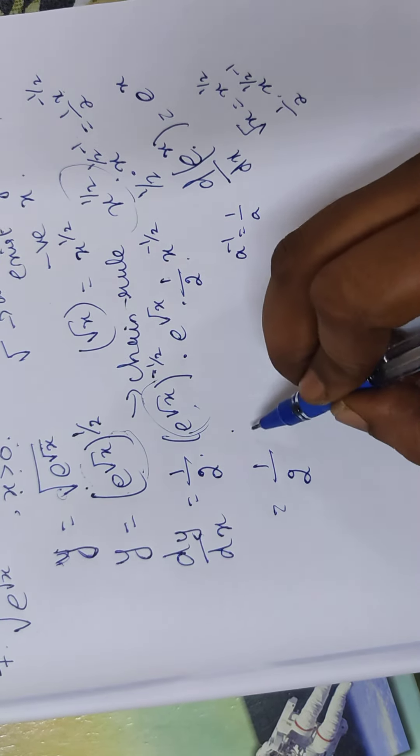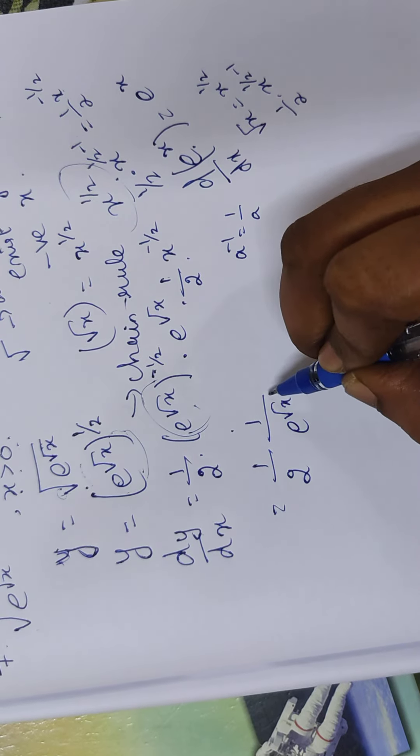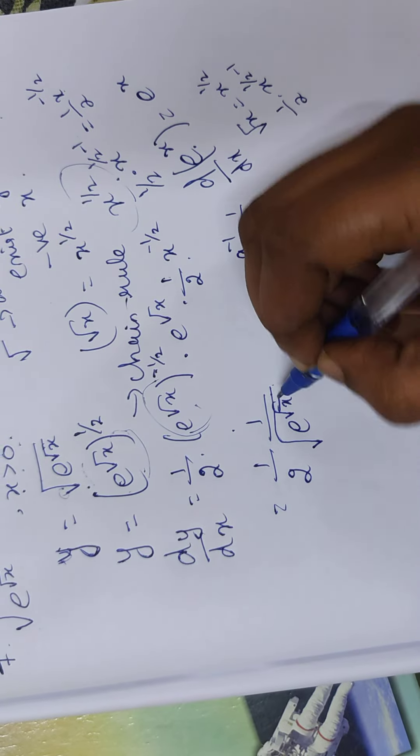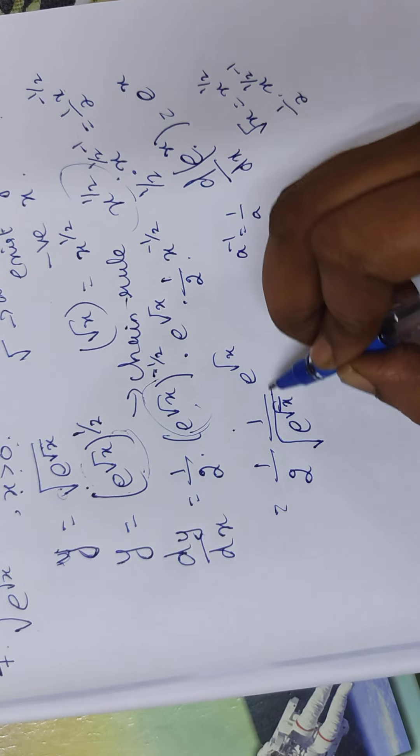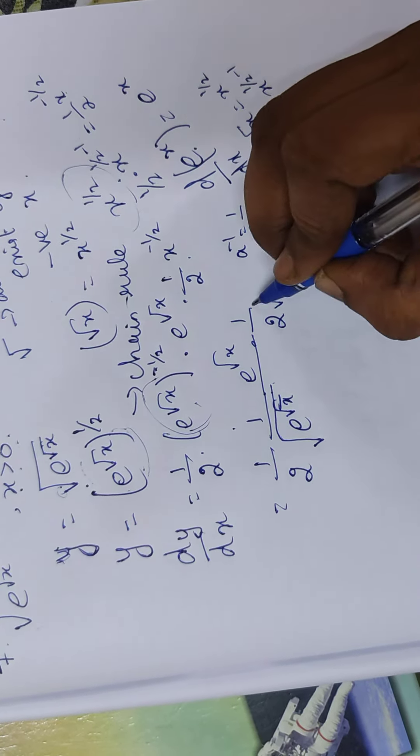So number 1 by 2, x to the power root x. And square root of. How power 1 by 2 represents square root? Here is the 2. Then e to the power root x. And 1 by 2. And this is the power root x.